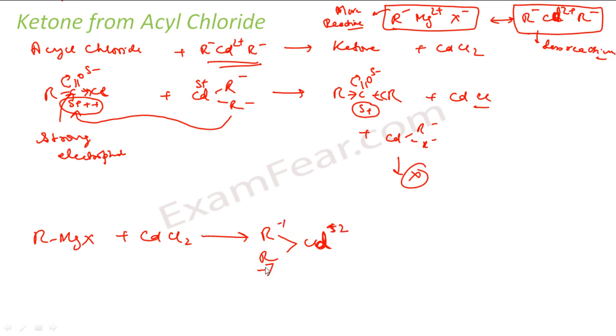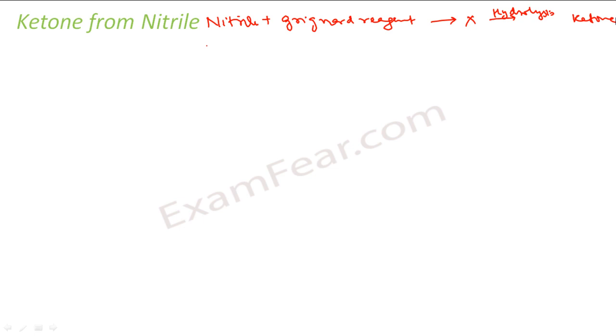Let's now discuss ways to prepare ketones from nitriles. To do this, we take a nitrile and we add a Grignard reagent. Whatever intermediate product we get, we then do a hydrolysis and we get a ketone. For example, if I have CH3CH2C≡N — that is my nitrile — and I add a Grignard reagent.